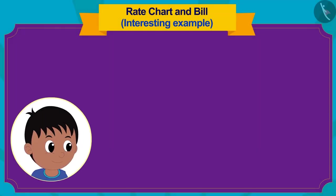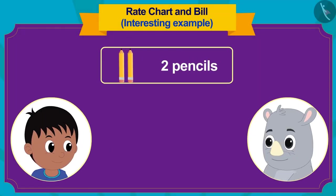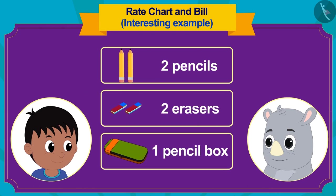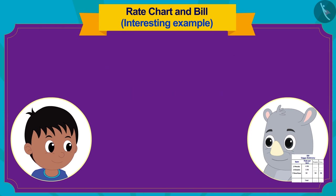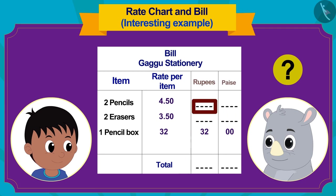Raju purchased 2 pencils, 2 erasers, and 1 pencil box from Gaggu. Children, can you fill the empty spaces in this bill made by Gaggu?